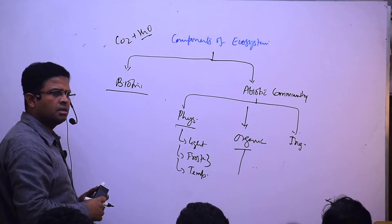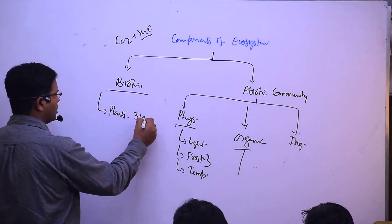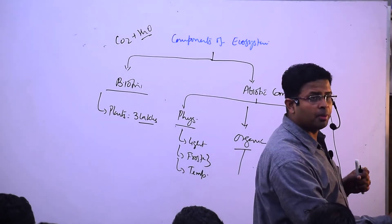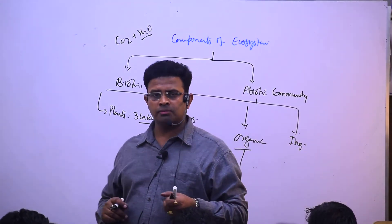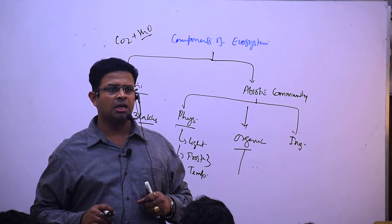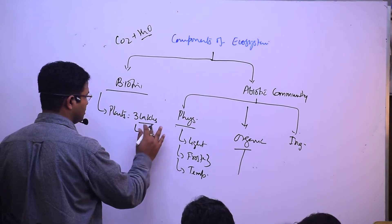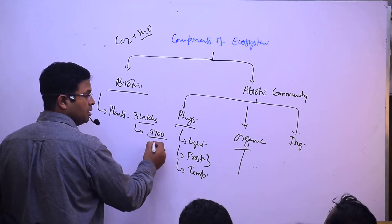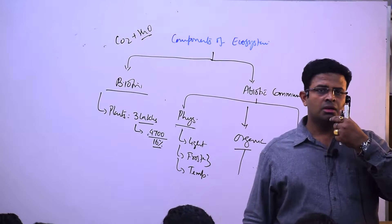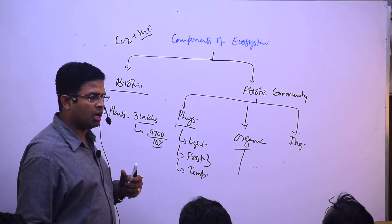Biotic community means plants and animals. In the world we have 300,000 plant species. India has 47,000 out of the total species of the world. India has around 16% of the total plant species of the world.